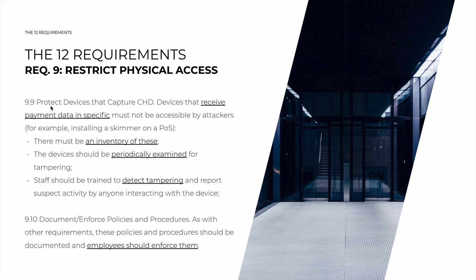Requirement 9.9 is all about protecting devices that actually capture cardholder data, such as POS systems. These are devices that receive payment data specifically, and they must not be accessible by attackers. The canonical example is an attacker installing a skimmer on your POS that copies card numbers. So there must be an inventory of these devices to begin with. These devices should be periodically examined for tampering. Staff should be trained to detect tampering themselves and to report any suspicious activity by anyone interacting with the device.